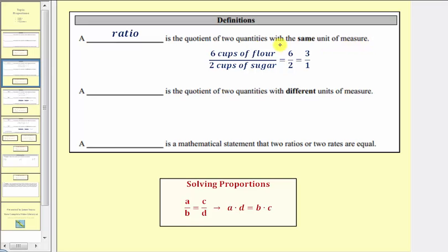For example, a ratio in a recipe might be six cups of flour to two cups of sugar. Notice how this is a ratio because we have the quotient of two quantities with the same units of measure, in this case, cups. Often we'll see ratios without units because the units would simplify out. We can also express this ratio as six to two. We can also simplify ratios similar to how we simplify fractions, though we must leave it as a quotient of two quantities. So six to two simplifies to three to one.